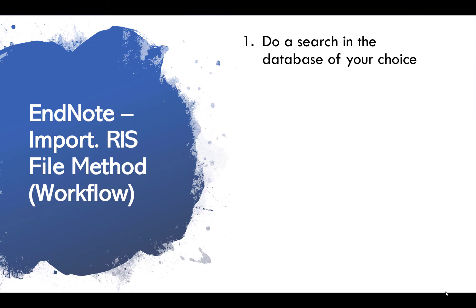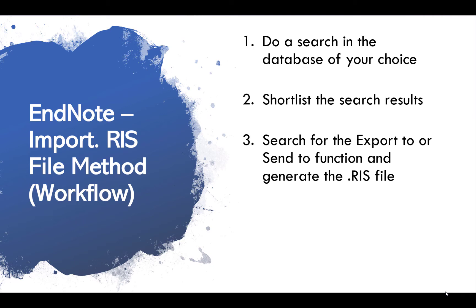First, do a search in the database of your choice. Once you have done your search, shortlist the results you want by selecting the checkbox or radio button beside that particular result. Once you are done, search for the export to or send to function. The name of the function and where it is located depends on the user interface of the database. The database will then generate a .ris file which you can import into EndNote by double clicking on it, or by clicking on File, Import, and then File.